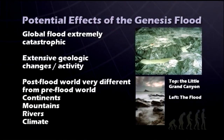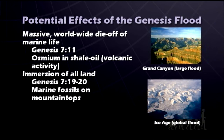I want to briefly discuss the potential effects of the Genesis flood. We know the global flood would be extremely catastrophic, giving extensive geologic changes. The pre-flood world would have been very different from the post-flood world — continents would have been different, mountains, rivers, and climate would have been different. We've seen small floods such as those following the Mount St. Helens eruption, and medium-sized floods responsible for forming the channeled scablands in the northwestern United States. Many individuals now feel the Grand Canyon was carved by a large flood. A global flood could have had tremendous effects.